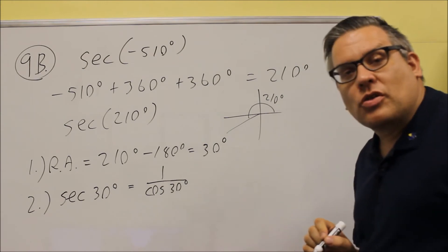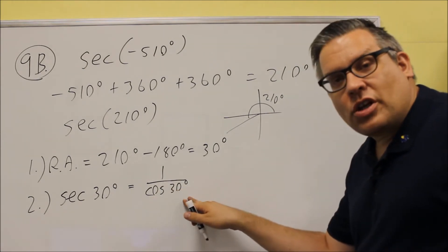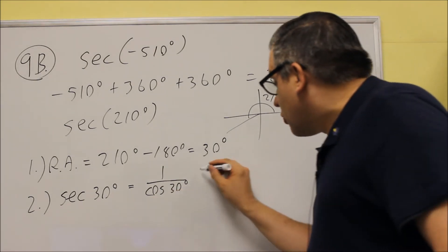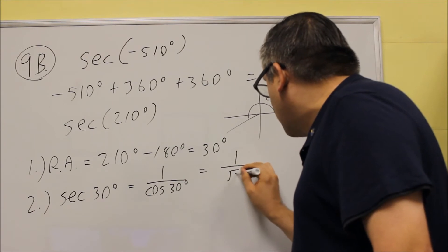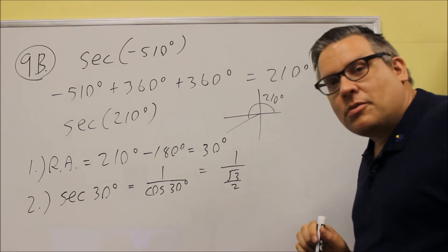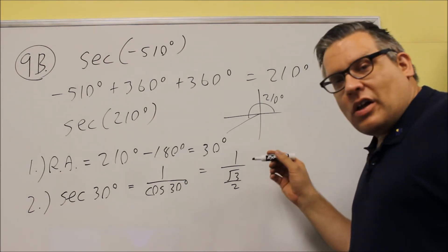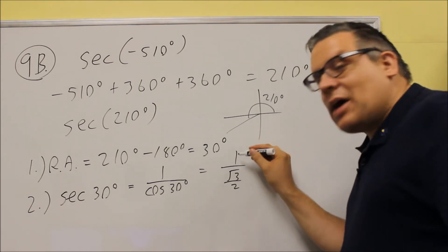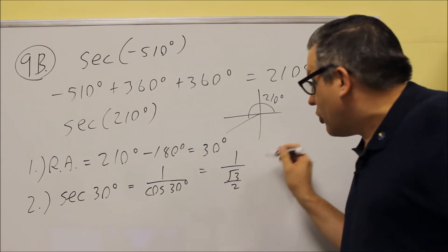So now we can get the value from the unit circle for cosine 30. That's going to be square root of 3 over 2. So we're going to put square root of 3 over 2 on the bottom. That's cosine 30. This is going to end up flipping this.